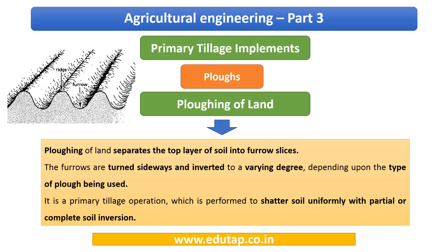Let us start with primary tillage implements. Basically, the first time you are plowing the land comes under primary tillage. You cannot immediately start sowing crops because repeated sowing and fluctuating climatic conditions — like alternating rainfall and sunlight — make the soil quite compact, making it difficult to sow immediately. So before sowing, you need to prepare the seed bed.